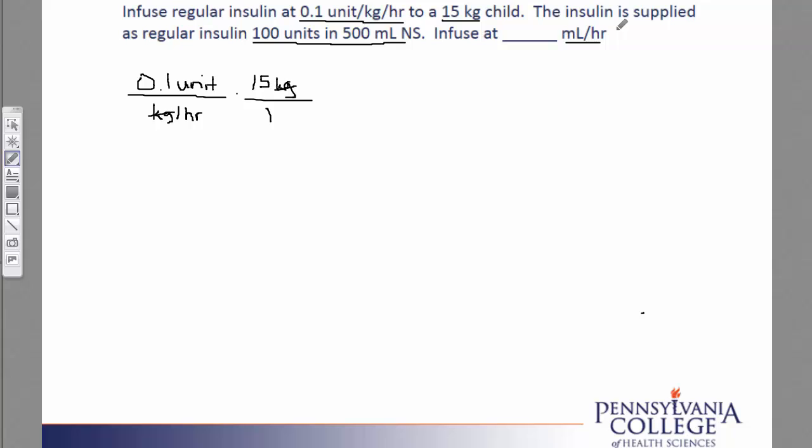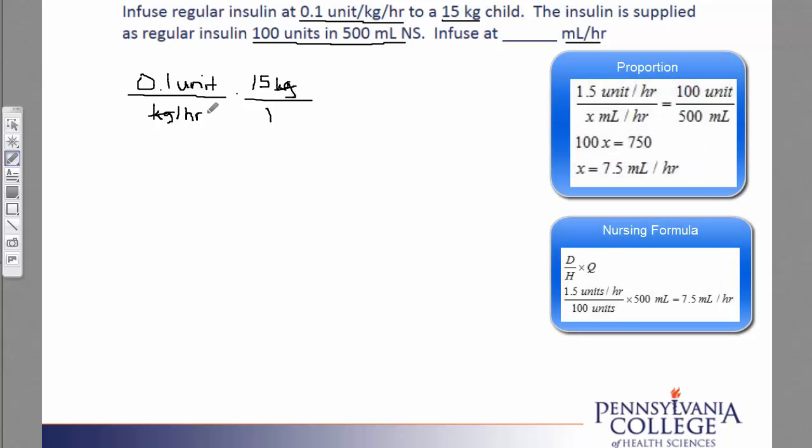Our goal is to get to milliliters per hour. And so we want to change the units into milliliters. We already have the label of hour. In order to cancel the label of unit, I'll put the 100 units that are in the IV bag in the denominator of the fraction. And I'll put the volume, the 500 milliliters, on the top of this fraction. Because these two numbers go together as the strength of the medication. Units cancels. And our remaining labels are milliliters per hour, which is the exact label that we wanted to find.